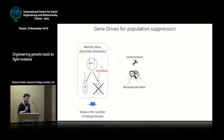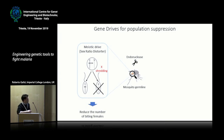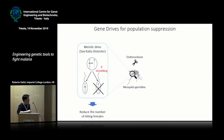Our lab at Imperial College focuses mostly on population suppression. One way to do this is by expressing endonucleases during meiosis in males — these endonucleases are eventually linked to the Y chromosome, though at the moment we have them on autosomes. The endonuclease recognizes and cleaves sequences specific to the X chromosome, specifically the ribosomal DNA sequence present in a few hundred copies only in the X chromosome of Anopheles gambiae. By doing this during meiosis, we can remove X-bearing sperm, generating a male-biased progeny and reducing the number of biting females that can transmit malaria.